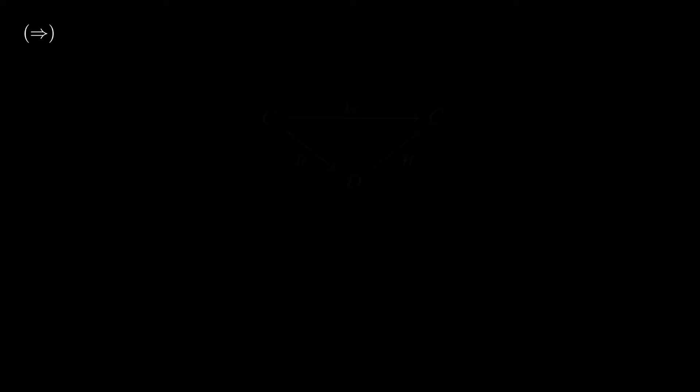To that end, let H gamma be any other pair, i.e. any other extension of this form. But by the triangle identities, this is equivalent to this diagram, right?